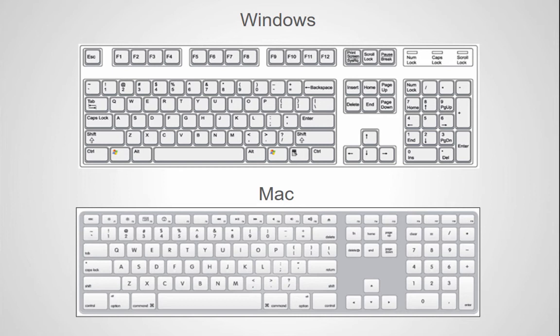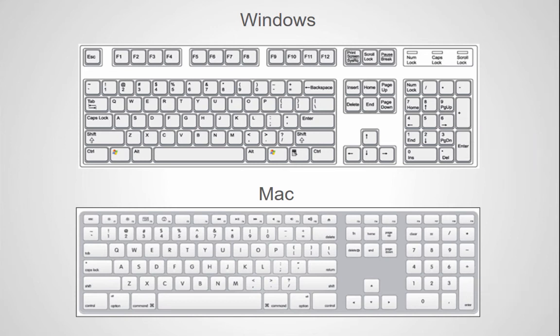If you are using a desktop computer, you will use the numeric keypad to select the note durations. If you are using a laptop without a numeric keypad, you will need to turn on Finale's laptop shortcut table. This will allow you to use the number row on your typewriter keyboard to change the note durations, just like on a numeric keypad.